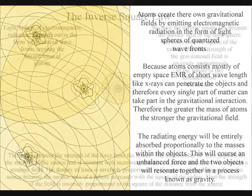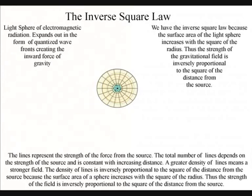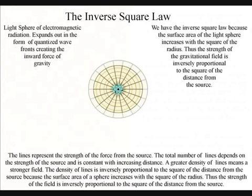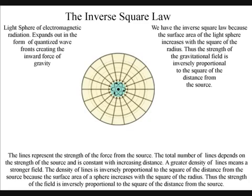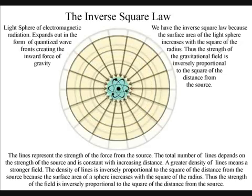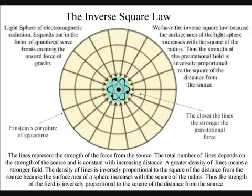We have the inverse square law, because the surface area of the light sphere increases with the square of the radius, thus the strength of the gravitational field is inversely proportional to the square of the distance from the source.